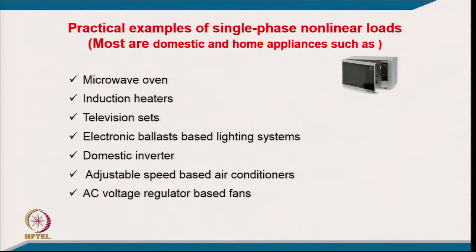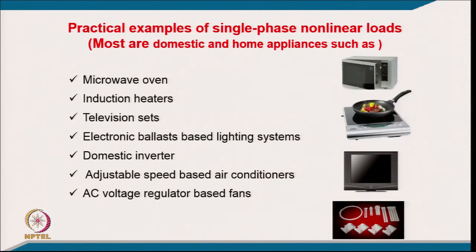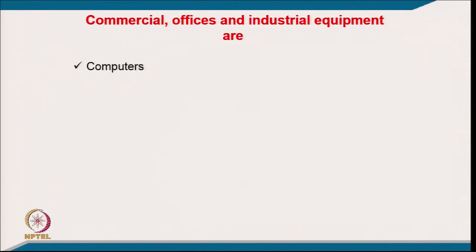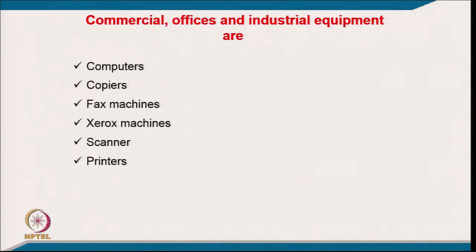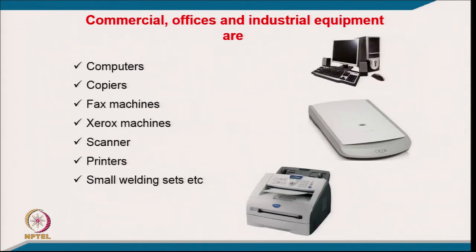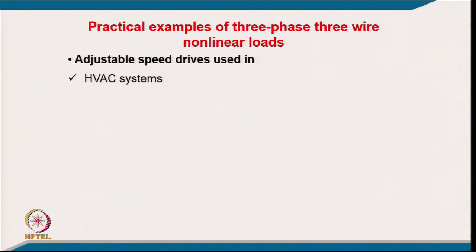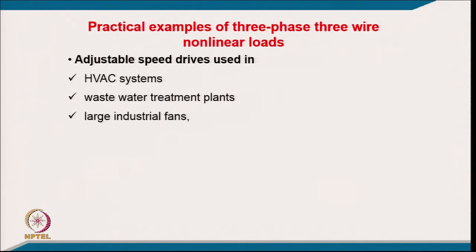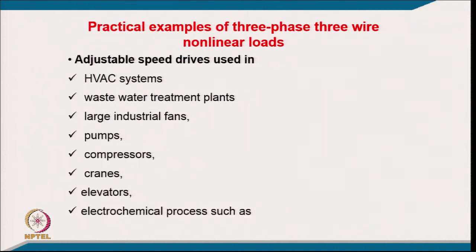Commercial, office, and industrial single-phase non-linear loads include computers, copiers, fax machines, Xerox machines, scanners, printers, and small welding sets. Three-phase three-wire non-linear loads include adjustable speed drives in heating, ventilating, and air conditioning systems, wastewater treatment plants, large industrial fans, pumps, compressors, cranes, elevators, and electrochemical processes such as electroplating and electro-mining.